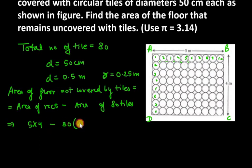Area of rectangle is 5 into 4 minus area of 80 tiles. So, 80 into pi r square. R value is 0.25. So, we will put that. 5 into 4 is 20. 20 minus 80. 80 into 3.14. R is 0.25 into 0.25.